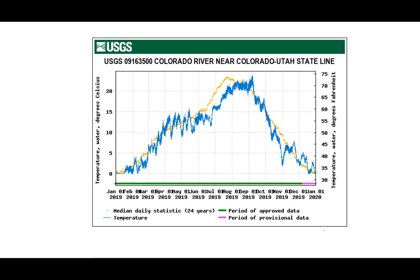Finally, if you don't look at the time scale and just look at the shape, you may think this looks like an event hydrograph, but it is not. This is the Colorado River near the Colorado-Utah state line — again, one year of data. The blue dots show the mean daily value based on historical data. What you have here is streamflow responding to temperature — this is a snow-fed river.